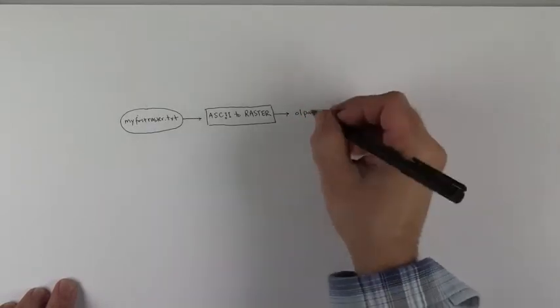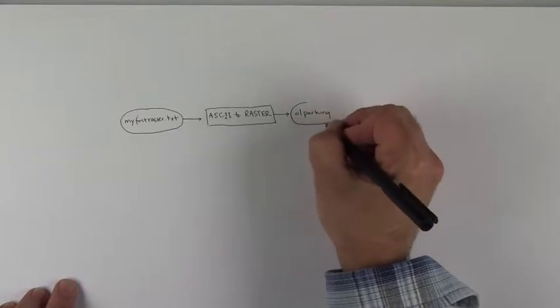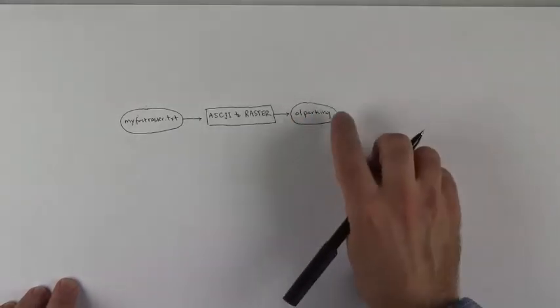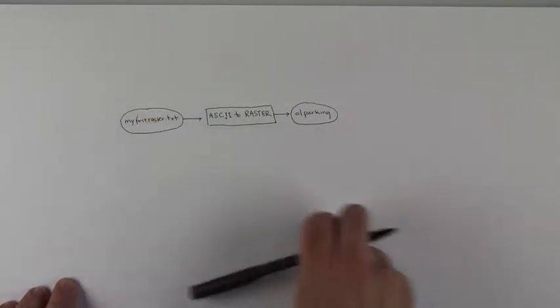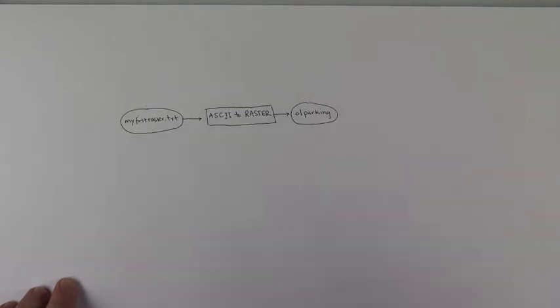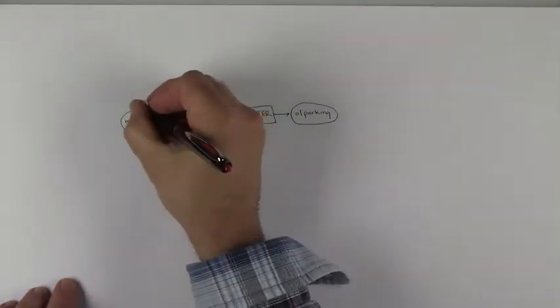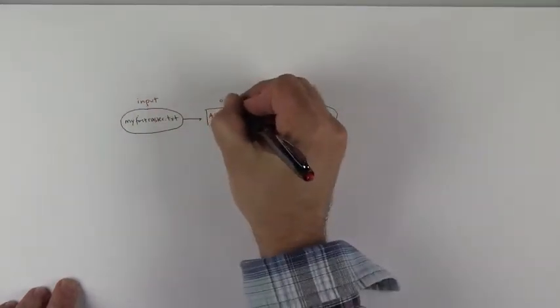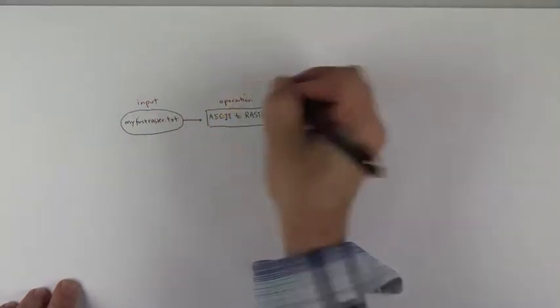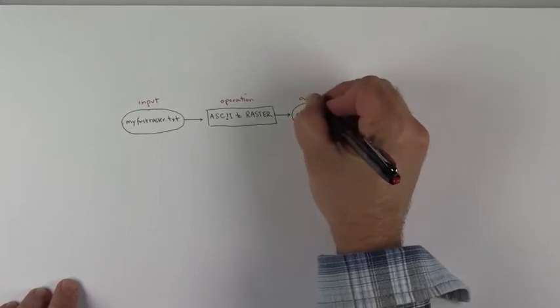It might have been your second first raster. This basic thing of an input, so let me just throw some labels on here: an input, an operation, and then something that gets kicked out or an output.